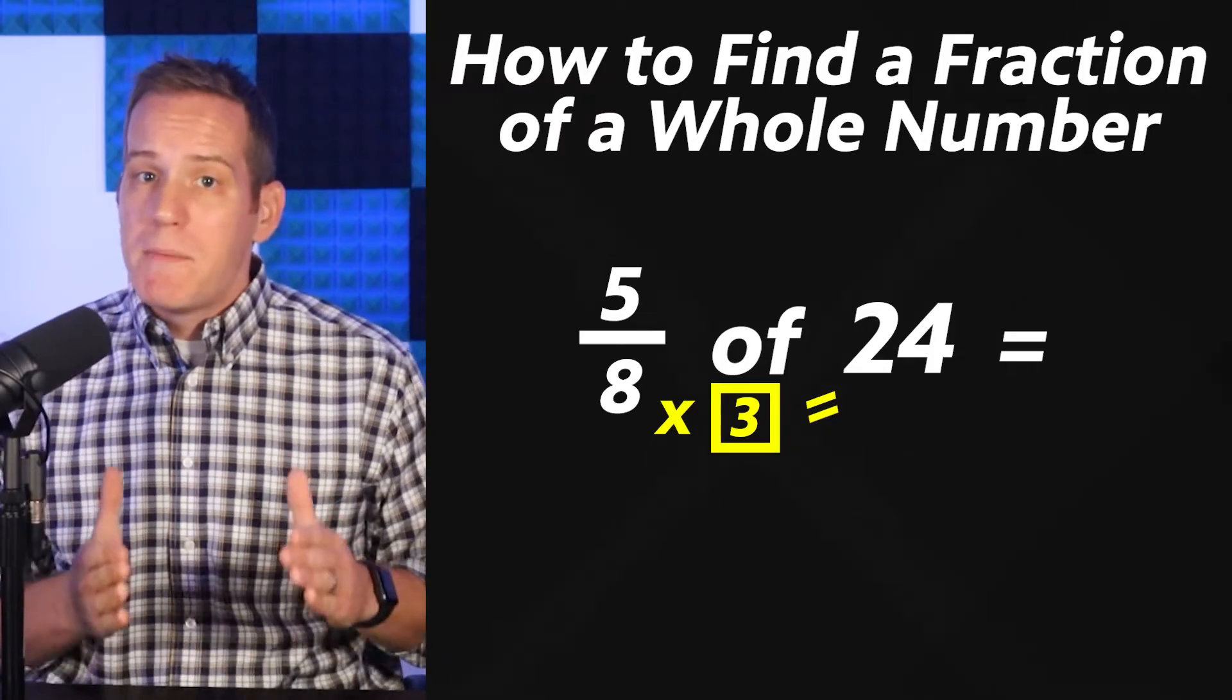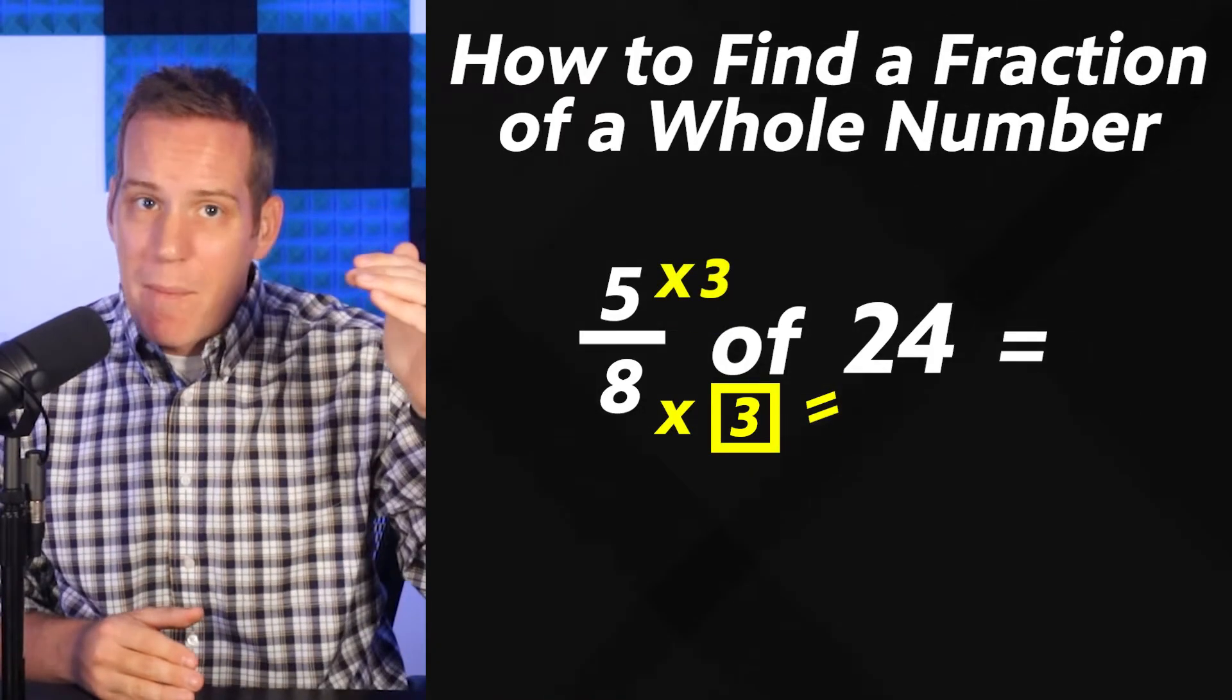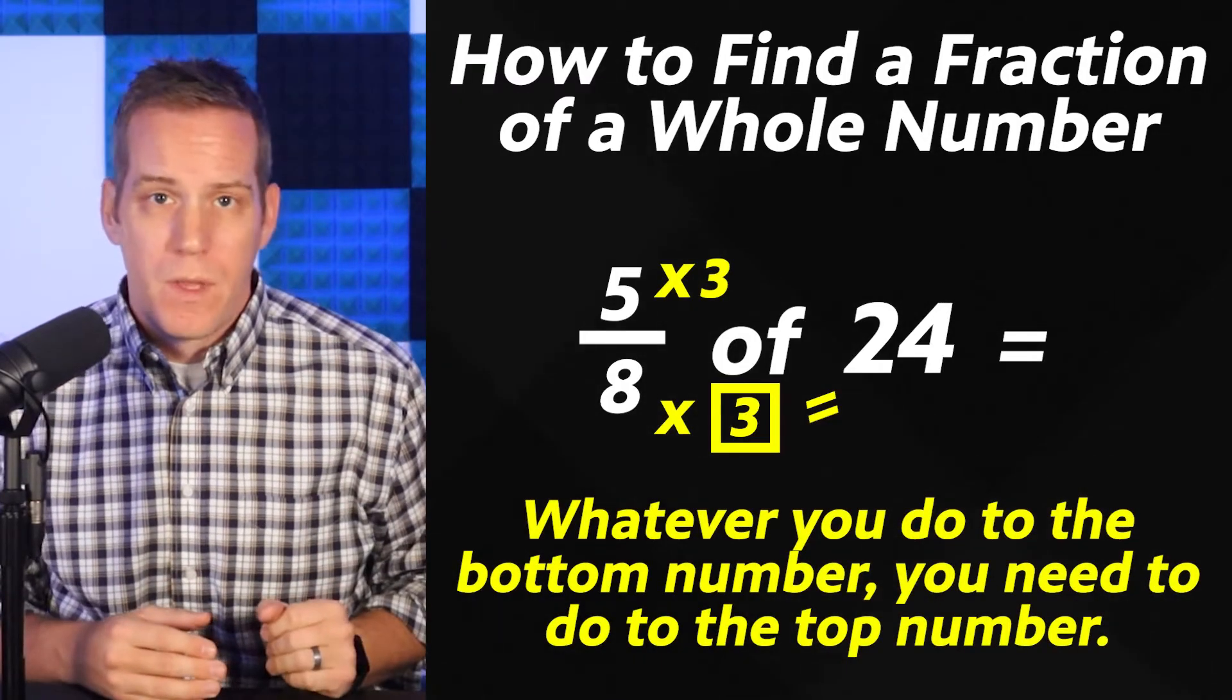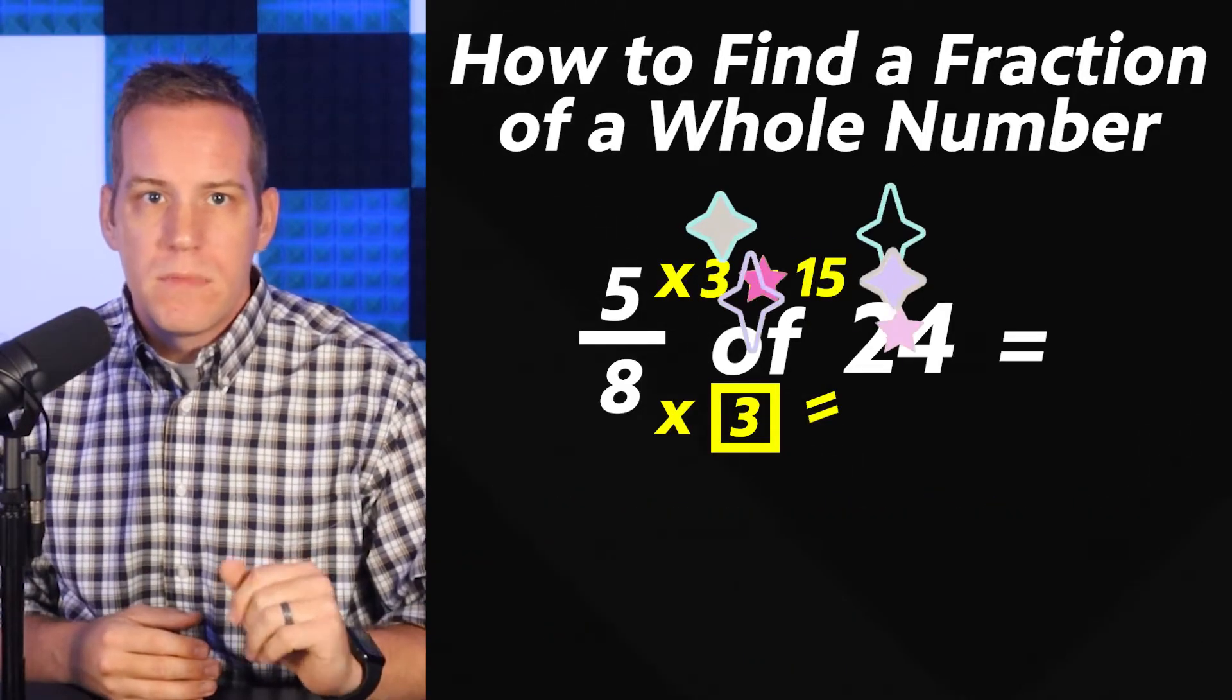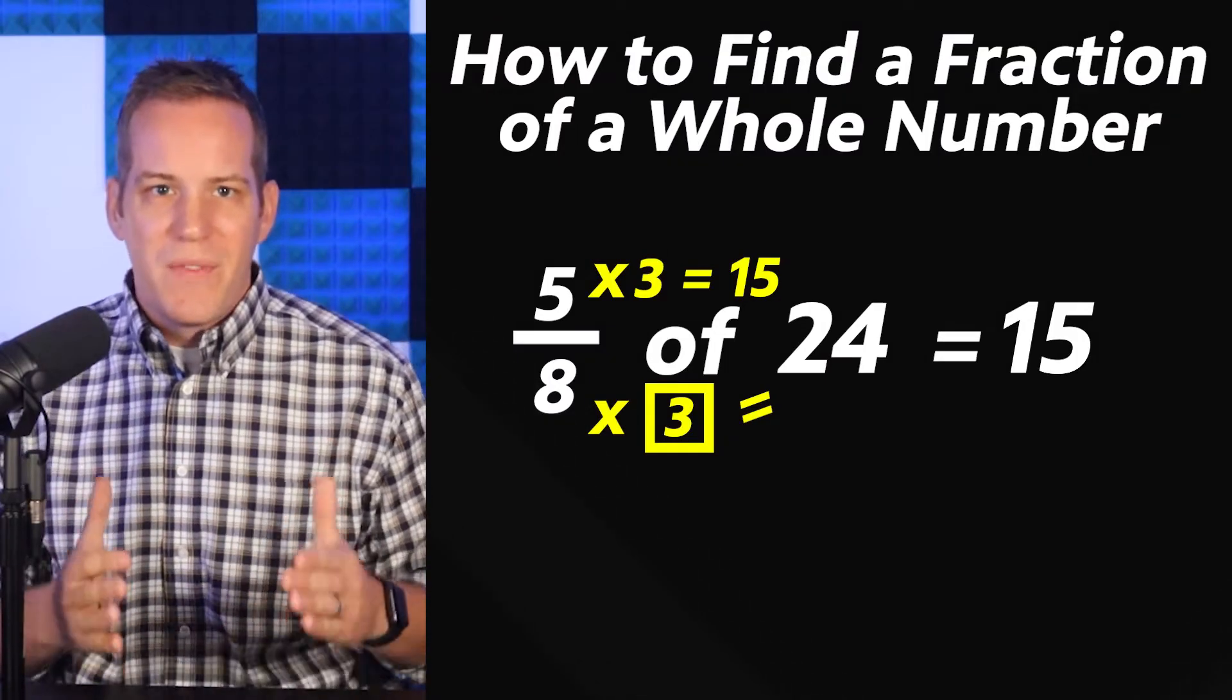Now if I do times 3 on the bottom I need to do times 3 on the top. Whatever I do to the bottom number I need to do to the top number. So 5 times 3 is 15 and guess what? That's the answer. 5 eighths of 24 is 15.